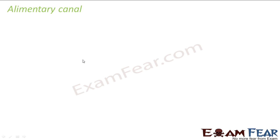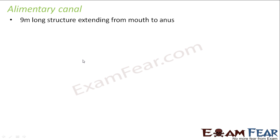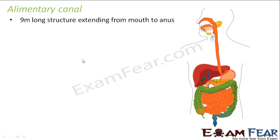Let us start our discussion on the alimentary canal. The word canal itself tells us it is a tube-like structure. This alimentary canal is a nine-meter-long structure which starts from the mouth and ends at the anus. You might wonder that if this is nine meters long but a normal human being's height is not that great — so how does it fit? Actually, this alimentary canal is not a straight tube. Inside the body, it is straight to some extent and then it gets coiled at some places.